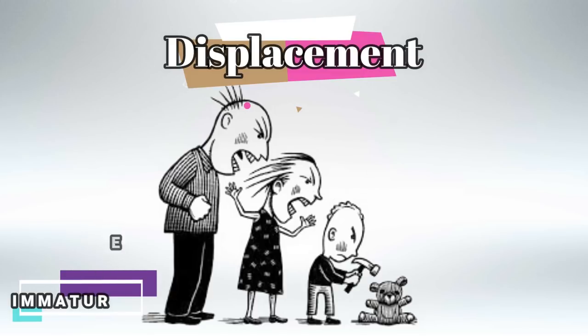We'll start with displacement. For example, a husband is having a bad day at work and he comes home and yells at his wife. The wife cannot yell back at her husband, so she goes and yells at her son. The son cannot yell at his mother, so he goes and sabotages and destroys his toys. Basically, the negative energy goes from one person to the next.